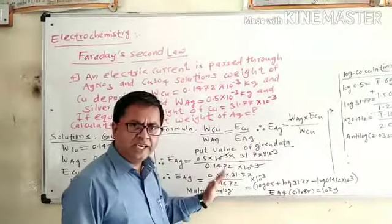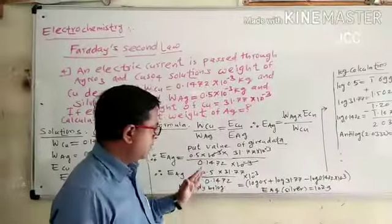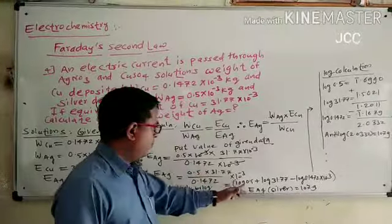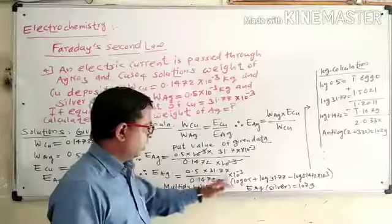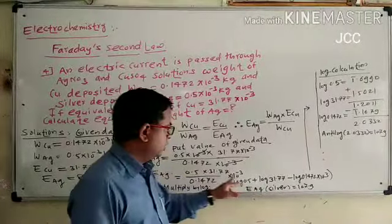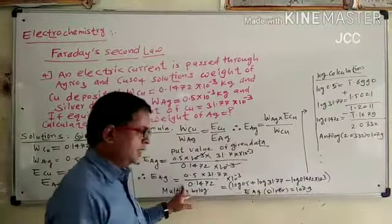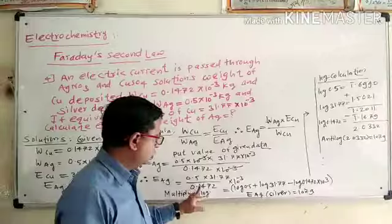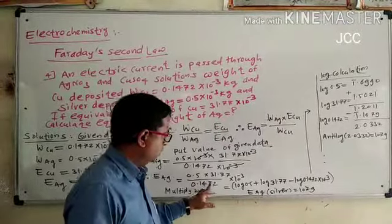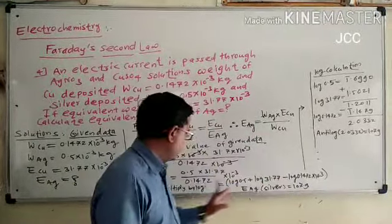Log will multiply directly. Log 0.5, then the multiplication becomes addition. So log 31.77 minus log 0.147.